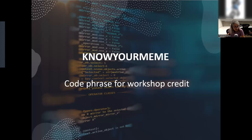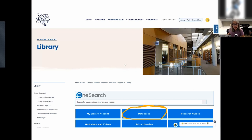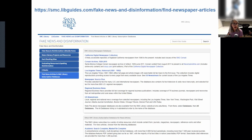The library has databases — newspaper databases — where you can go and look at journalistic reporting by journalists using ethical news coverage techniques, and those are available on our website. If you are attending this workshop for extra credit, the code phrase you need to provide your instructor with is 'know your meme' — all one word. We subscribe to a database called U.S. News Stream, which includes the U.S. major daily newspapers along with several other newspaper collections. Here is one place where you can go and look at a variety of newspapers without having to pay for them, and the full text of the newspapers is there.